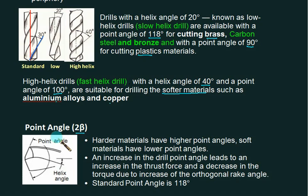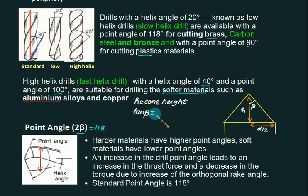This total input angle is called the point angle. The standard value, if nothing is given, is 118 degrees. Looking at this geometry, the diameter is d, and this dimension is the cone height. This is half the diameter, d/2. The total angle is 2β, so this angle is β. The cone height h is calculated as: h = (d/2) / tan(β). β equals 59 degrees, which is 118 divided by 2.